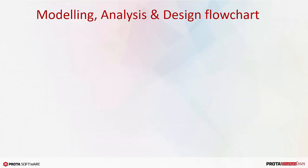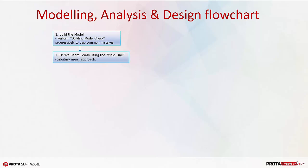Let us now look at the modeling, analysis, and design flowchart. We first start by building a 3D physical model. It is highly recommended you perform building model check progressively to trap common modeling mistakes as you build the model. As you model beams and slabs, the beam loads are automatically derived using the default yield line or tributary area method.